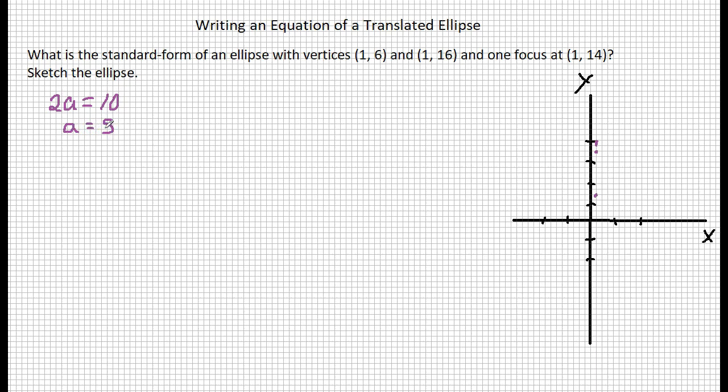So what does that mean? That means that 5 units up and 5 units down will give us our center. So there's 4 and 5, right here will be our center. And the coordinates of our center is going to be (1,11).